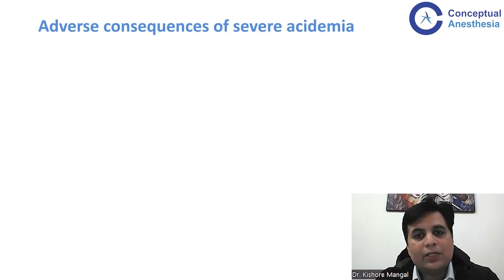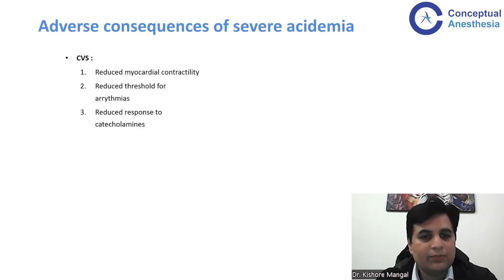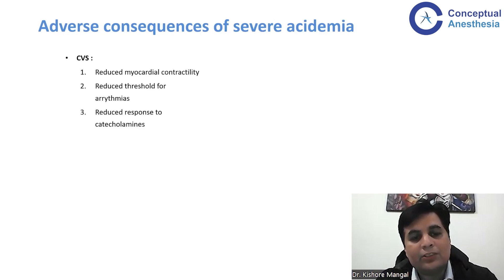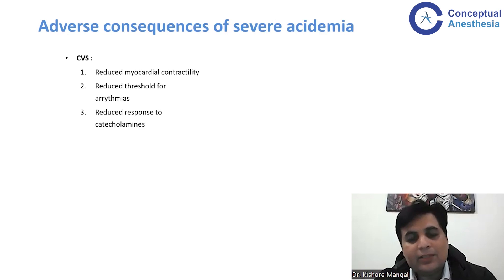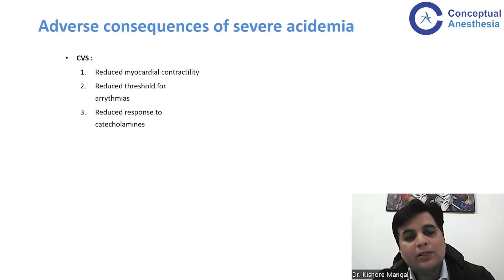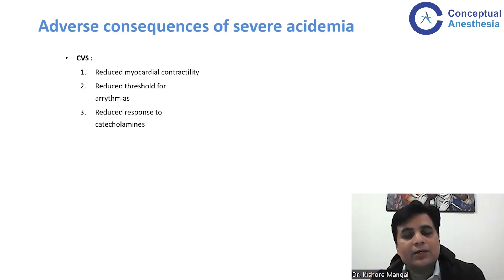What are the adverse consequences of this severe acidemia, especially the metabolic one? Metabolic acidemia has a major impact on the cardiovascular system. It can reduce myocardial contractility, reduce the threshold for arrhythmias, and reduce the response to catecholamines, which is very important from a critical care point of view. That means the patient will have low ejection fractions, low stroke volumes leading to shock, and arrhythmias can further worsen the shock. The treatment you are instituting may not have the response you actually want, so correcting the underlying disorder is essential.